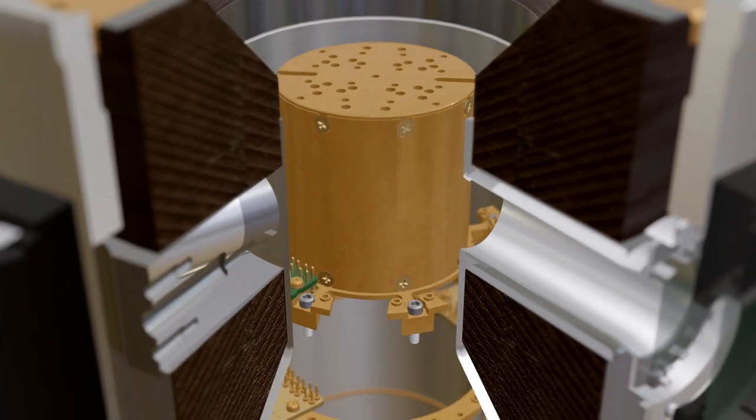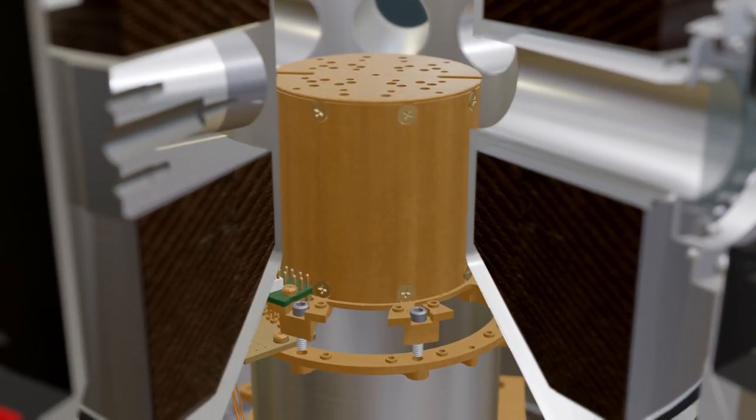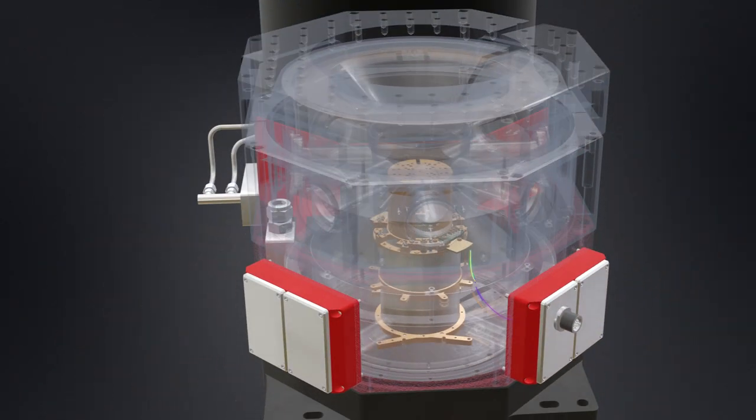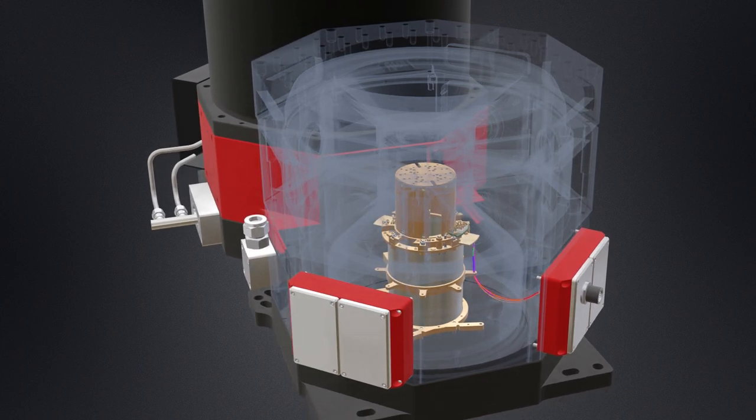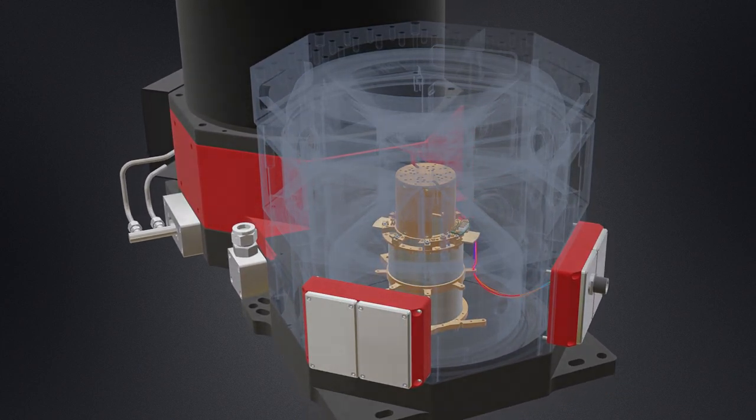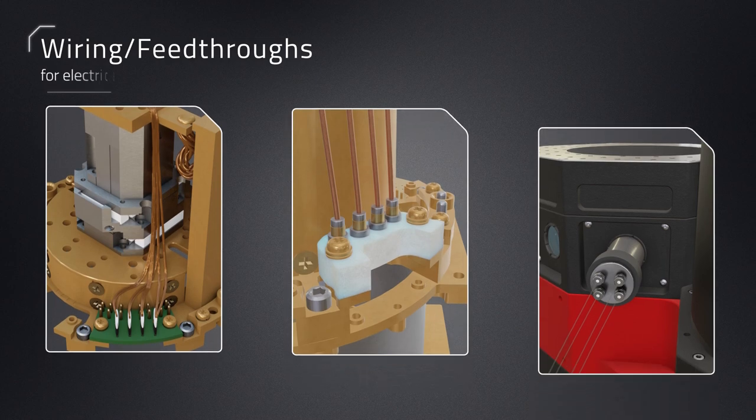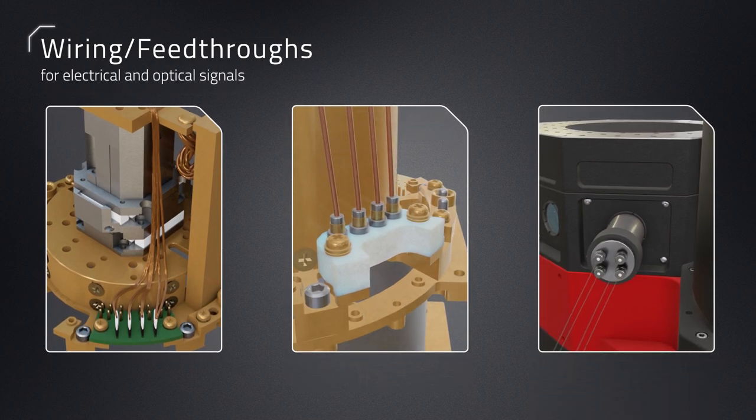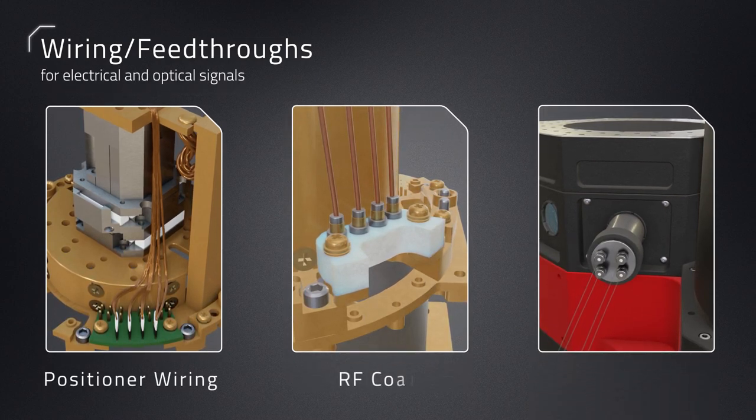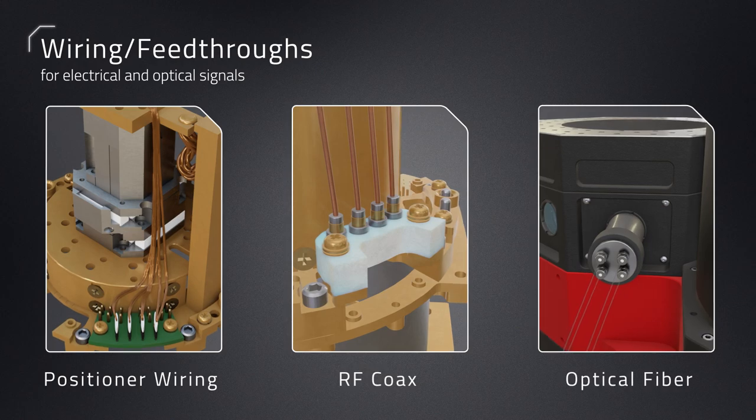Sample pods easily plug into the pre-wired temperature control column, instantly providing electrical access to the pod via the external connections on the cryostat. A variety of wiring and feed-through options are available, including positioner wiring, RF coax, and optical fiber feed-throughs.